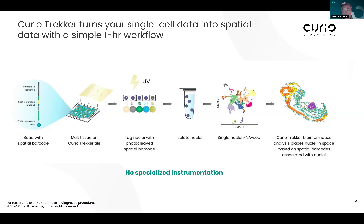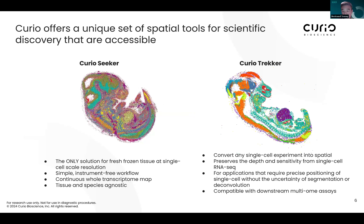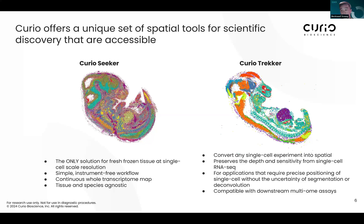If you're interested in either platform, you can contact us directly — they address different things. CurioSeeker is the only solution for fresh frozen tissue at single-cell scale resolution, with a simple instrument-free workflow that gives you a continuous whole transcriptome map. CurioTrekker converts any single-cell experiment into a spatial one, preserving the depth and sensitivity of single-cell RNA sequencing, and is compatible with downstream multi-omic assays.